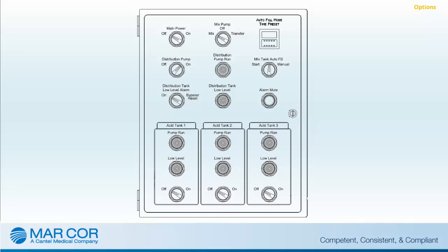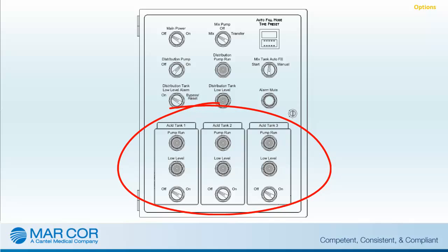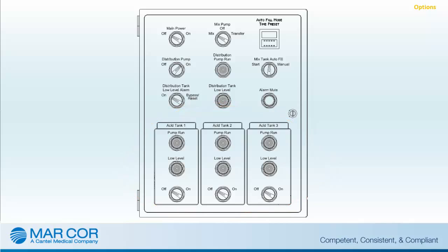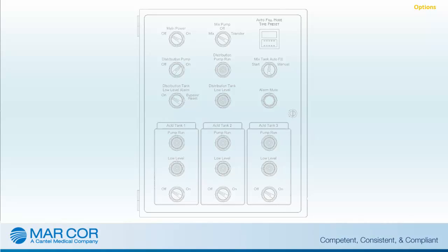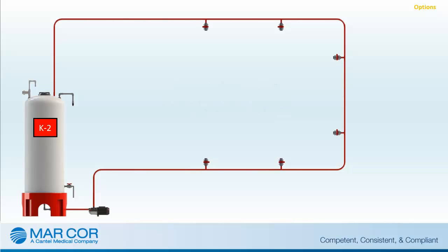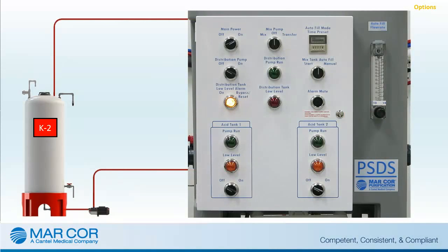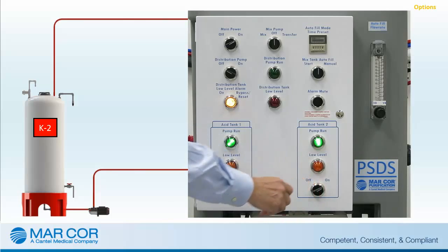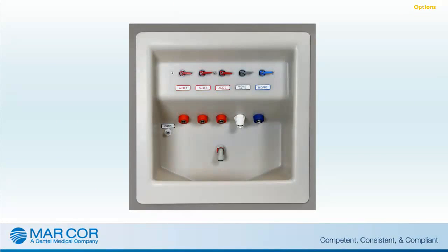Multiple product options accommodate varying customer needs for distribution loop combinations, including single bicarbonate and up to three acidified concentrate solutions. The acid system operates using up to three acid solutions in bulk storage tanks. The tanks are fitted with low-level float switches to alarm and notify the operator when the acid level is getting low. Each bulk acid tank has its own pump to distribute the solution. While the acid pumps have a separate control box, they are wired into the main PSDS controller so they can be individually controlled from a single location. Wall-mounted solution dispensers are capable of delivering up to three different concentrates and water as well as drain access. Process connections are configured to be compatible with dialysis manufacturer's equipment.